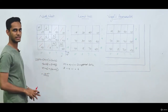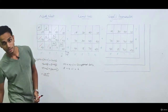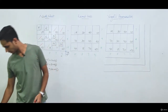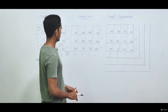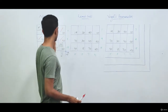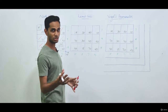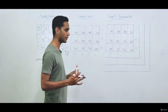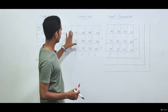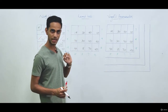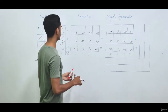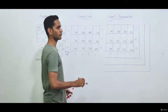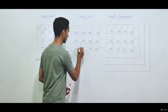Now we move on to the least cost method. The same principle of allocating and cancelling applies, but the criterion for choosing cells changes. In this method, we find the cell with the least cost element and allocate the maximum to that cell. Here, the cell with the least cost element is the one with a cost of 8.